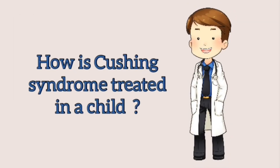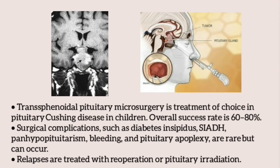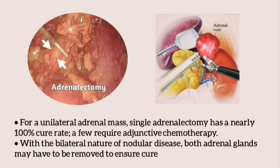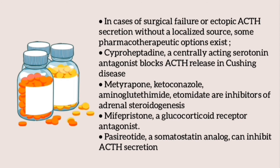Transsphenoidal pituitary microsurgery is the treatment of choice for pituitary microadenoma (Cushing disease), with an overall success rate of 60–80%. Surgical complications such as diabetes insipidus, SIADH, panhypopituitarism, bleeding, and pituitary apoplexy may occur but are rare. Relapses are treated with re-operation or pituitary irradiation. For a unilateral adrenal mass, single adrenalectomy has a nearly 100% cure rate, and few require adjunctive chemotherapy. In bilateral nodular disease, both adrenal glands may need to be removed to ensure cure.